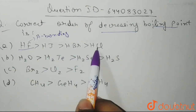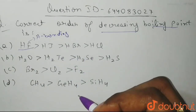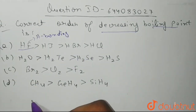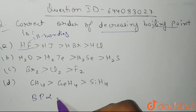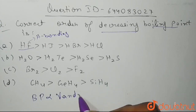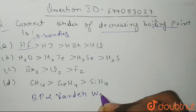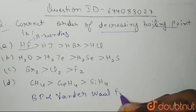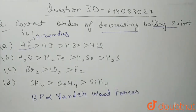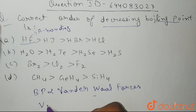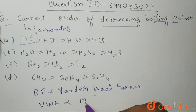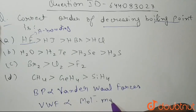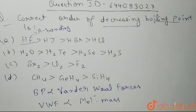For HI, HBr, and HCl, we should know that boiling point is directly proportional to Van der Waal forces — more the Van der Waal forces, more will be the boiling point. Van der Waal forces are directly proportional to molecular mass. The greater the molecular mass, the greater will be the Van der Waal forces, and thus more will be the boiling point.